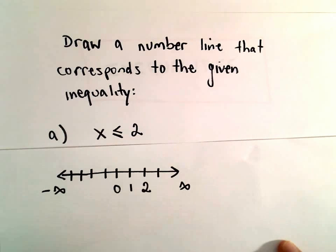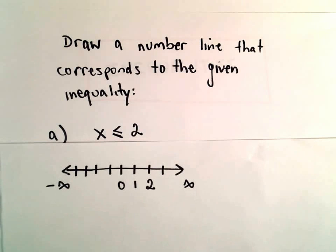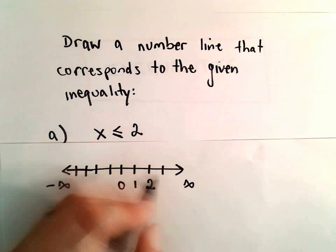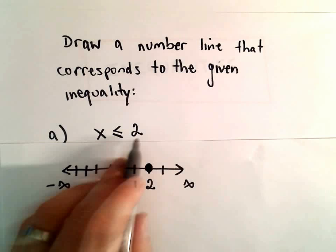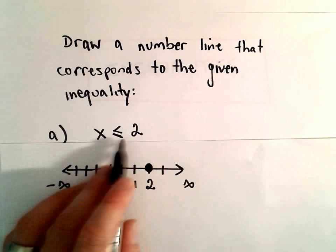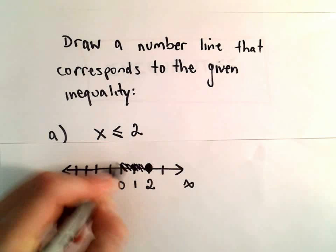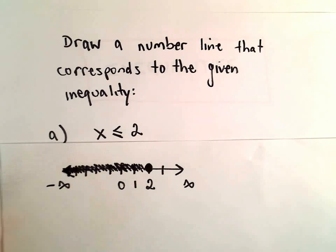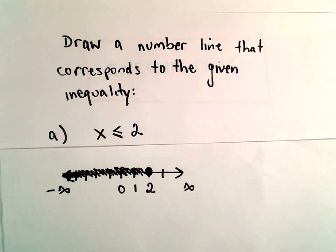I always stick negative infinity and positive infinity on there as well. The convention is, since it's less than or equal to 2 — since it can equal 2 — we use a solid dot at that value. And then we shade everything that's less than 2, which would be everything to the left of the number 2. So now we've got a number line that corresponds to the interval x less than or equal to 2.